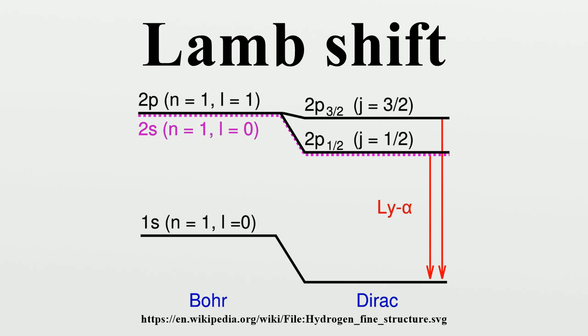Lamb and Robert Rutherford measured this shift in 1947, and this measurement provided the stimulus for renormalization theory to handle the divergences. It was the harbinger of modern quantum electrodynamics developed by Julian Schwinger,